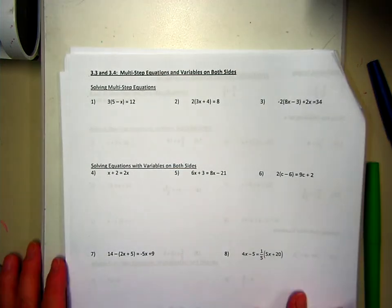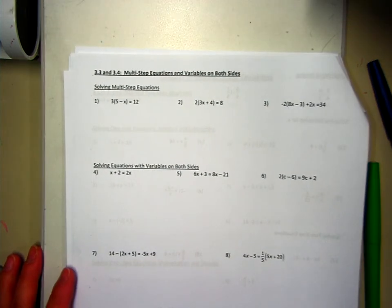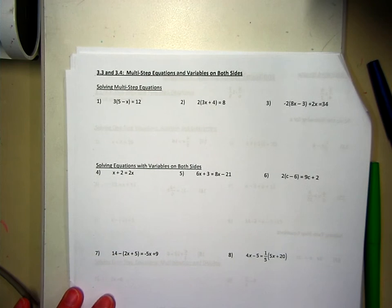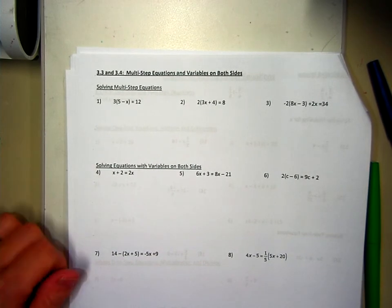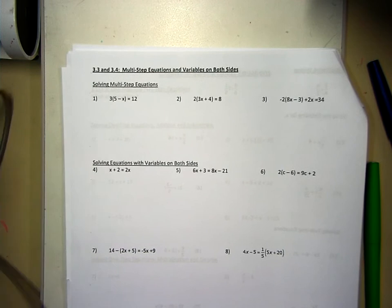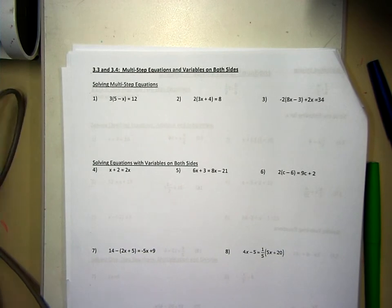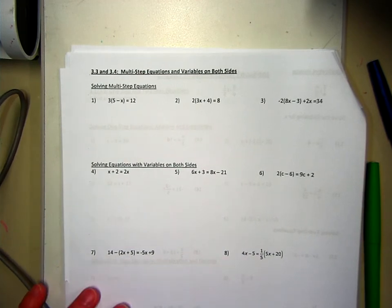Today we're going to learn about solving multiple step equations. This is page 12 in your notes packet. The steps for solving a multiple step equation are the same as before: we always start by distributing, then combine like terms, then add or subtract terms over, and your last step should always be to divide. Let's do a couple of them together.